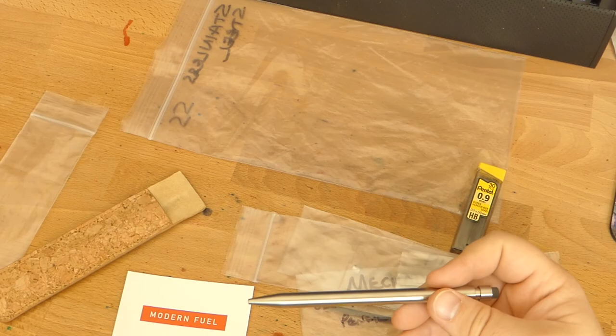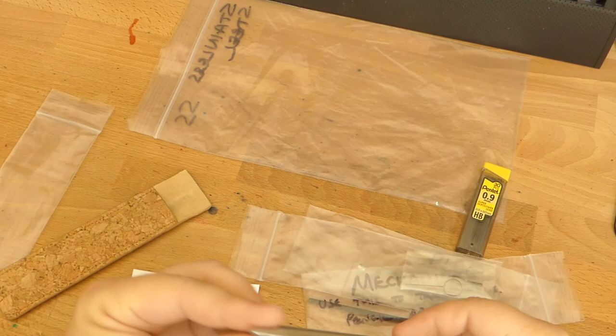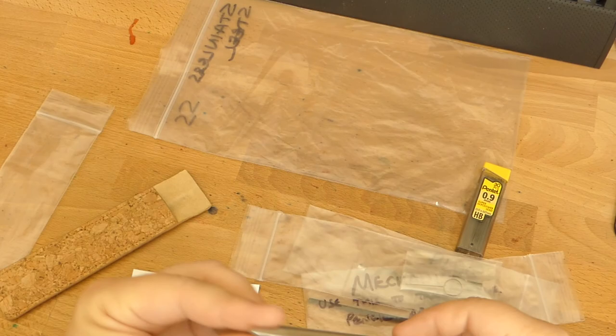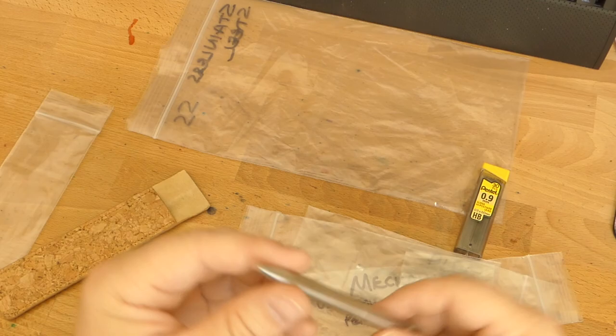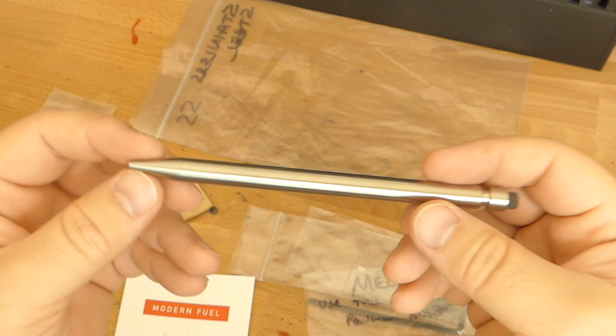So the cool thing about these pencils, and one of the reasons I was really interested in trying it, is that you can actually change the mechanism. So this one, you can see this comes out. I like that in a mechanical pencil when you can retract this little tube, which I'm sure there's a technical name for. But this is pretty nice. It's got a good action to it. It's got a good weight, good feel.